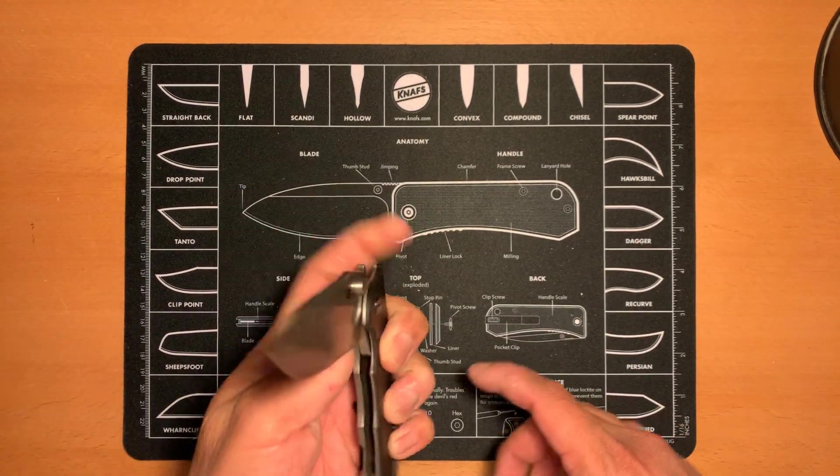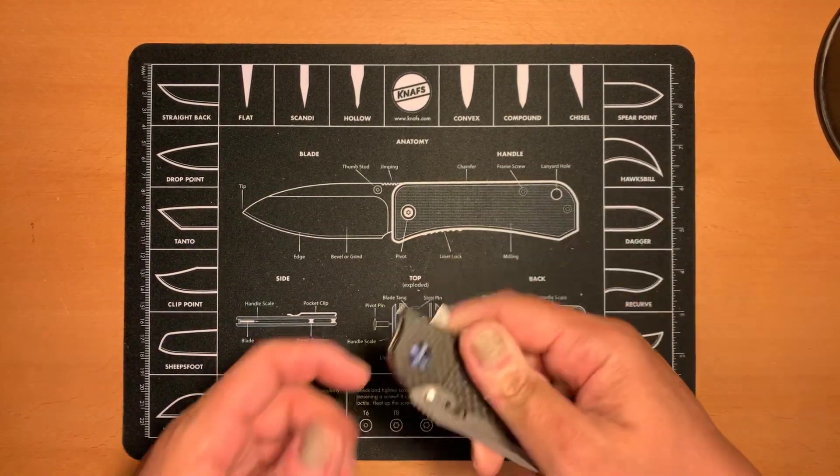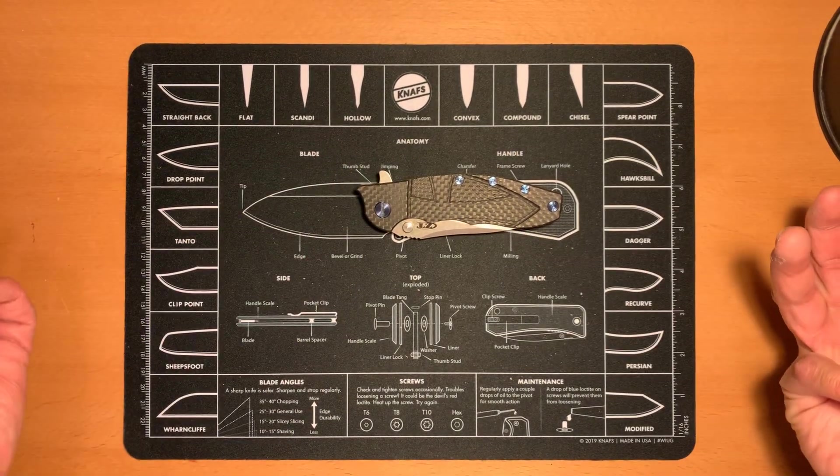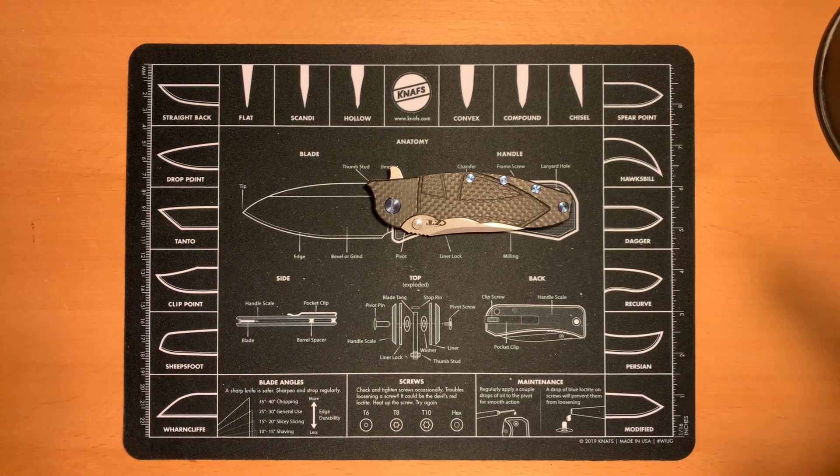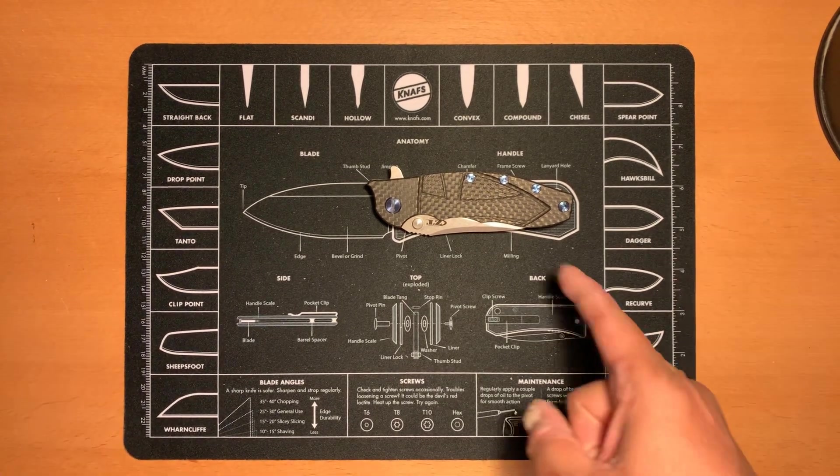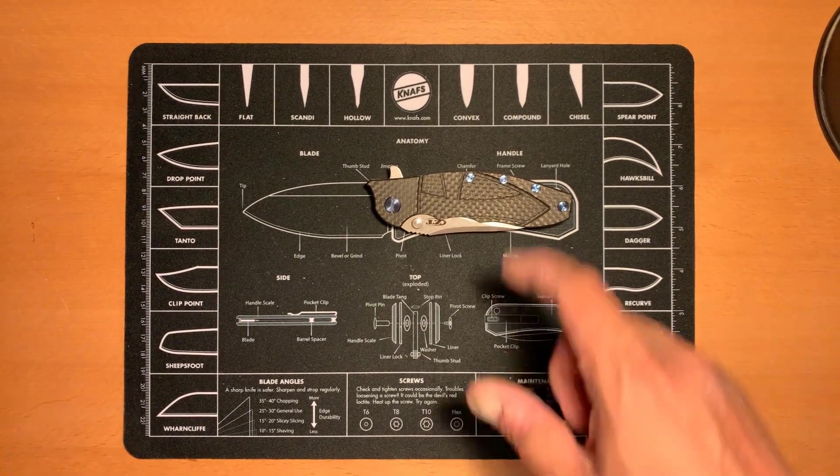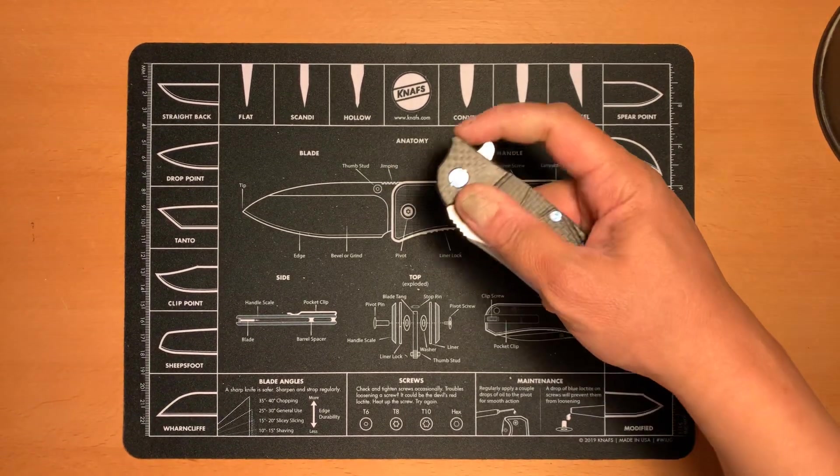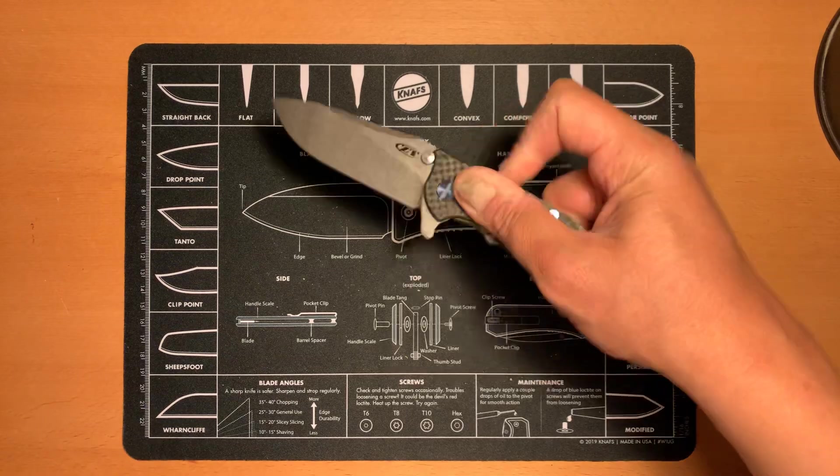And which is basically true, because if you go on YouTube, everybody, including their dog, has done a video on this one. And it says something. It means that everyone was drawn to this knife at one point in their knife collecting. Whether they kept it or not, they were still drawn to it.